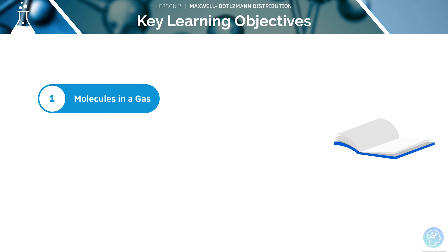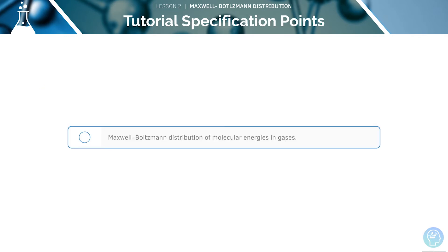We've got two key learning objectives for today's lesson. The first is to look at molecules in a gas and the second is to look at plotting a Maxwell-Boltzmann distribution. Here is the AQA specification point we'll be covering in this tutorial. We'll be looking at the Maxwell-Boltzmann distribution of molecular energies in gases.